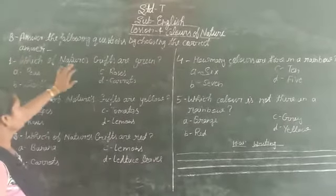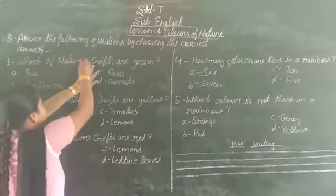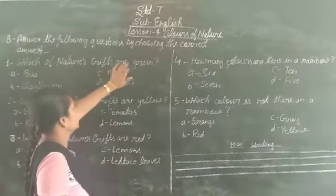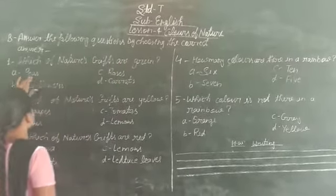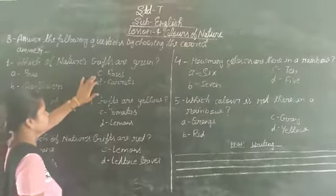First, which of nature's gifts are green? Peas, sunflower, roses, and carrots?